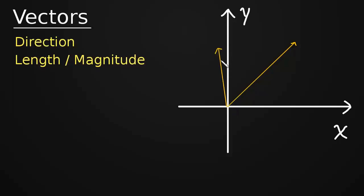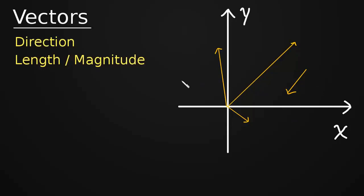This is also a vector — it's pointing in a certain direction, it has a certain length. Even though it doesn't start at the origin, it's clearly pointing in a certain direction and clearly has length. So vectors need not start at the origin; they can start anywhere. This is also a vector: it's pointing in a certain direction and has a certain length.